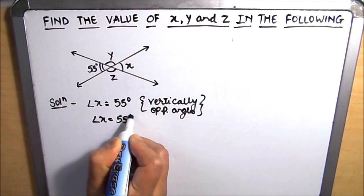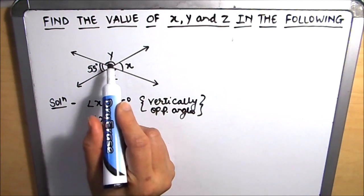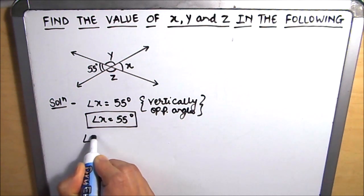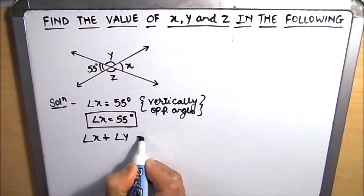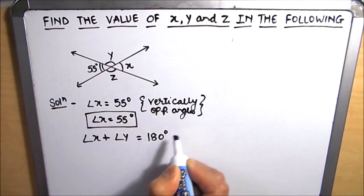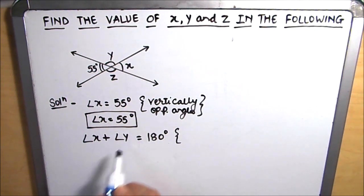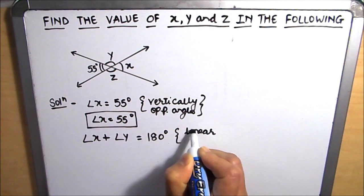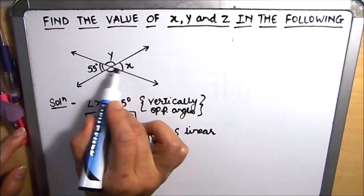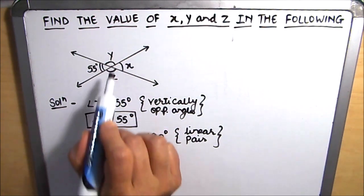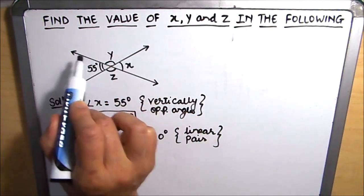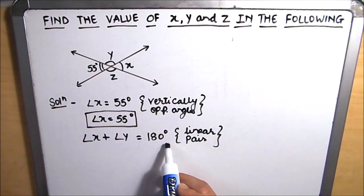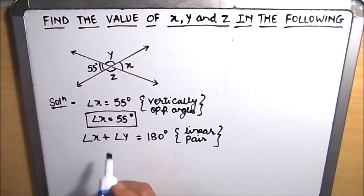Now we need to find the value of y and z. We see that angle x plus angle y is equal to 180 degrees. They are equal to 180 degrees because these two are making a linear pair. Angle x and angle y are making a linear pair, and the sum of the angles in a linear pair is equal to 180 degrees.